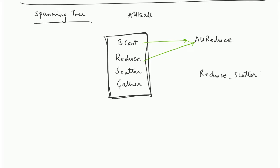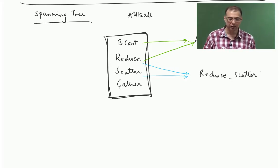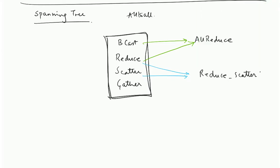How do you do reduce-scatter? Reduce-scatter can be done by combining reduce and scatter — that is simple. First you reduce all the data on a single rank, and then you just scatter the elements to all the ranks. That is reduce-scatter.